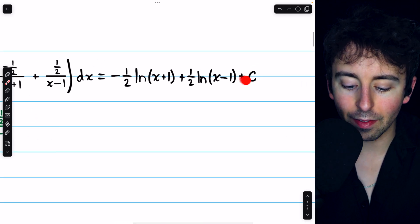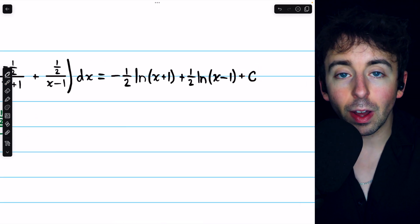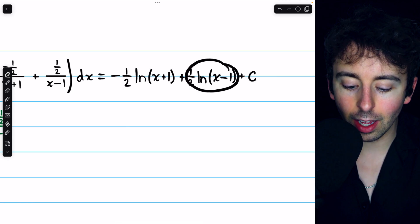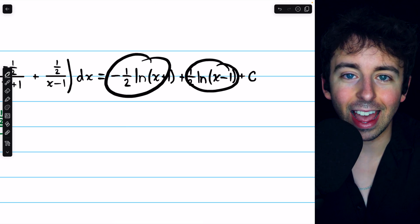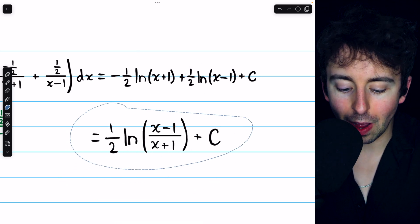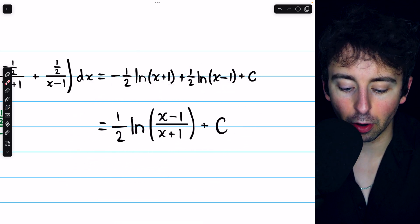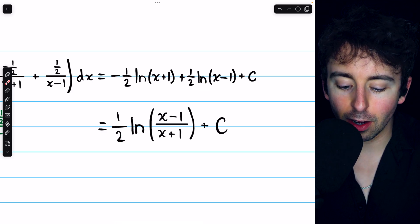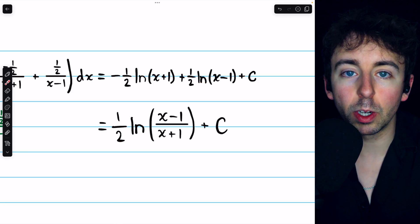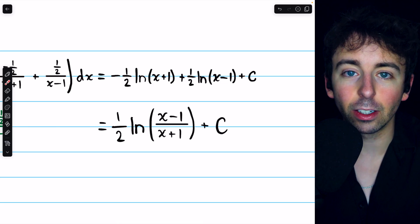Of course, we also have the arbitrary constant. Finally, we have a log minus a log, and so we can rewrite this as division. We also factor the one half out of both terms. Taking that one half out, we have this log minus that log, which we can rewrite as division in a single log.